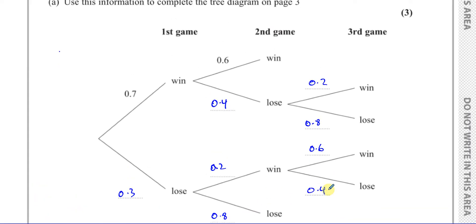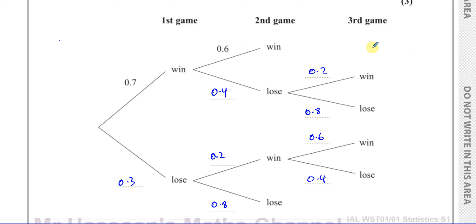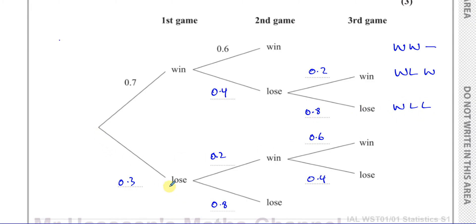The different outcomes we have are: win-win (blank, no third game), win-lose-win, win-lose-lose, lose-win-win, lose-win-lose, and lose-lose (no third game). These are all the possible outcomes in this situation.